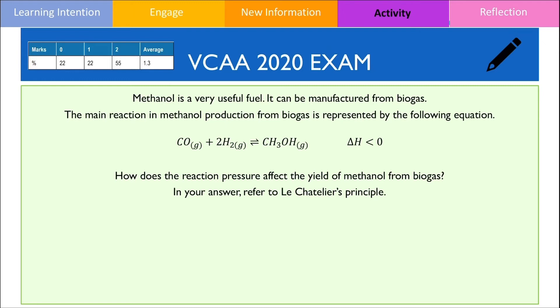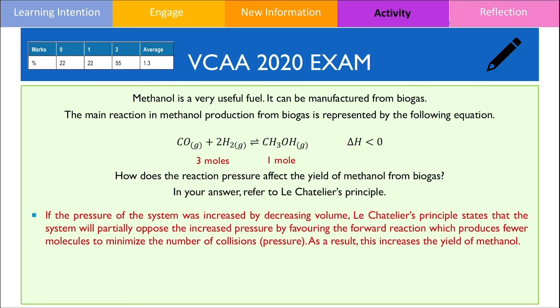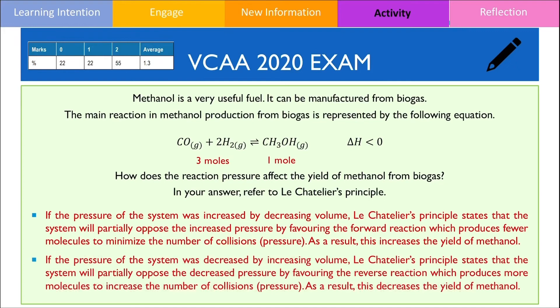This question asks how reactor pressure affects the yield of methanol. In this particular reaction, there are more reactant molecules than product molecules. If we increase the pressure of the system by decreasing the volume, the system will partially oppose by favouring the forward reaction because it contains the lowest number of molecules, consequently increasing the yield of methanol. In contrast, decreasing the pressure by increasing the volume will result in the system favouring the reverse reaction as it contains more molecules, attempting to restore lost pressure. Therefore, this will decrease the yield of methanol since equilibrium shifts to the left.